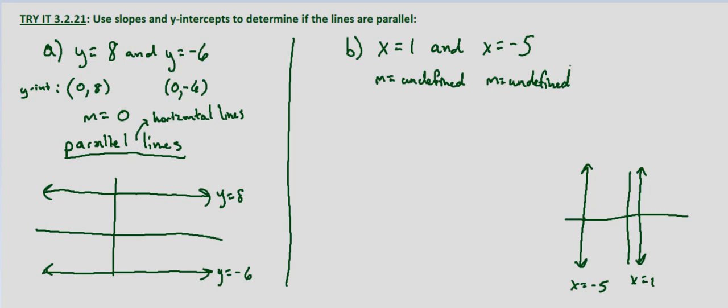And another way of saying they equal a different value is instead of looking at the y-intercept when it's a vertical line, we'll look at the x-intercept. So in this case the x-intercept is (1, 0). And over here the x-intercept is (negative 5, 0). So since they have the same slope and different x-intercepts we know that the lines are parallel.